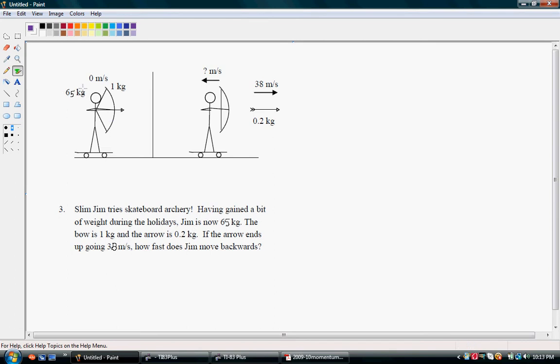So we have Jim which is 65 kilograms and the bow which is 1 kilogram and the arrow which is 0.2. But our momentum before is still 0 since our velocity is 0. So in our conservation of momentum equation we have a 0 for before.